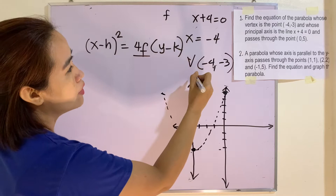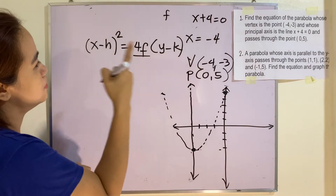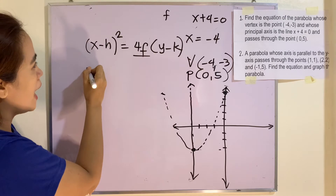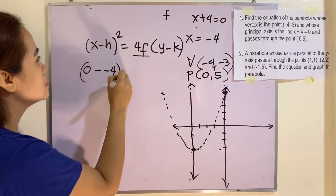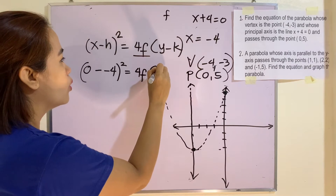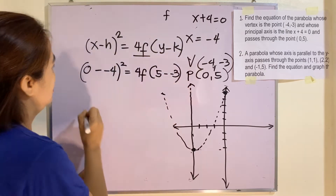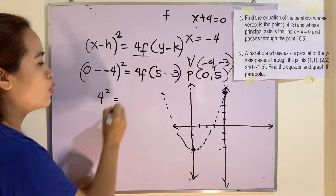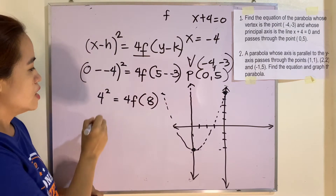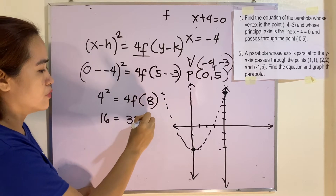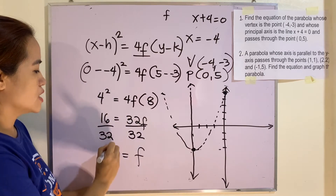Our point is (0, 5). So substituting: (0 - (-4))² = 4f(5 - (-3)). This gives 4² = 4f(8), so 16 = 32f. Dividing both sides by 32, f = 1/2.